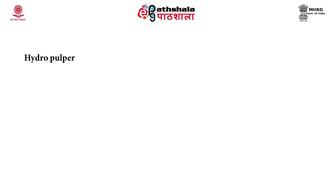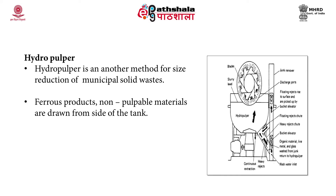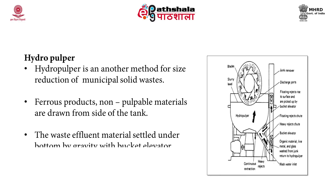A hydro pulper is another method for size reduction of municipal solid waste. Inside the hydro pulper, solid waste along with water is added. High speed cutting blades mounted on a rotor at the bottom convert pulpable and friable material into a slurry containing 2.5 to 3.5% solids. Non-pulpable material such as tin, metal, and cans are pushed through a chute and ejected out, collected in a bulk elevator. The slurry collected at the bottom is taken out for further processing.